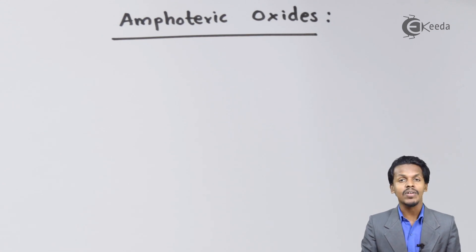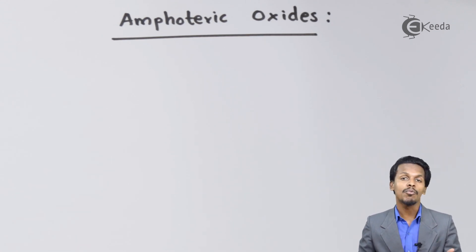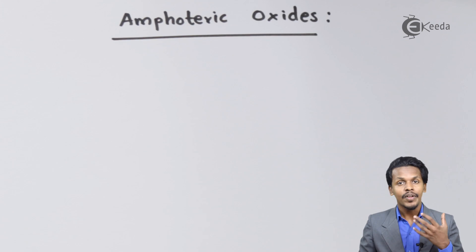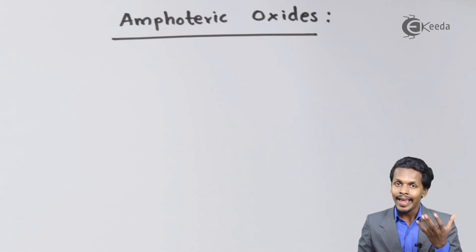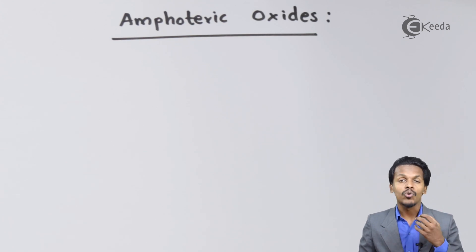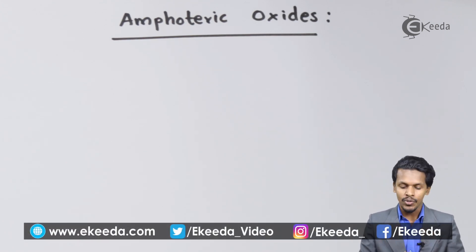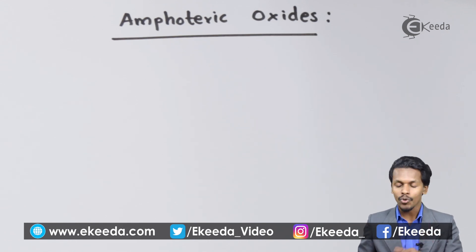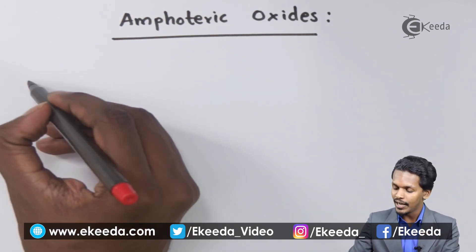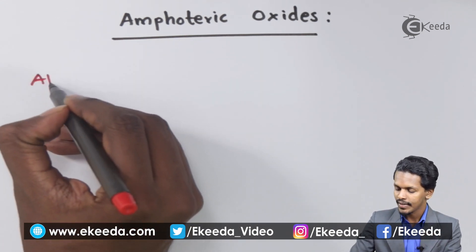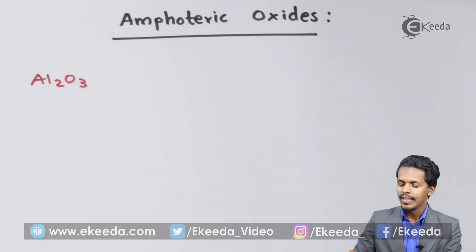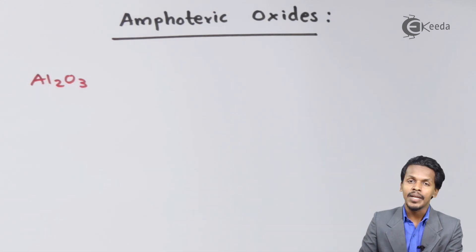The next classification is amphoteric oxides. Amphoteric oxides are those oxides which have both the property of acting like an acid and acting like a base. Let us look at an example — Al2O3, that is aluminium oxide.